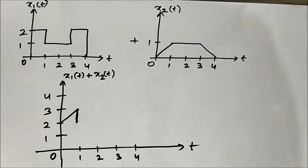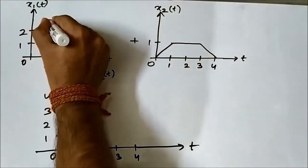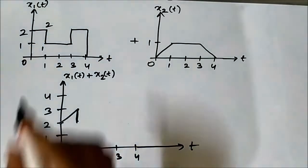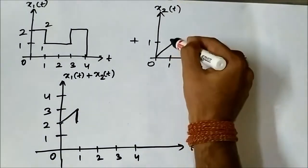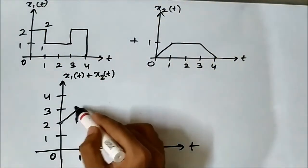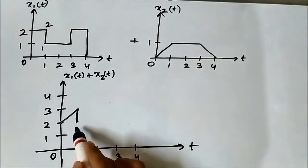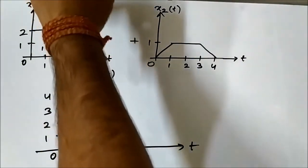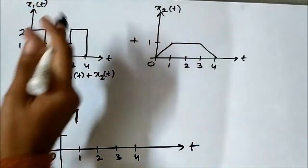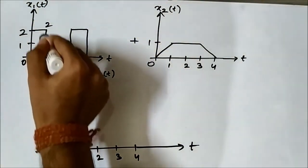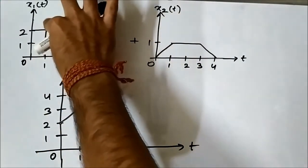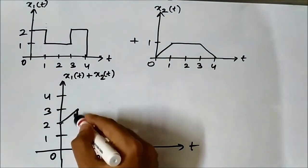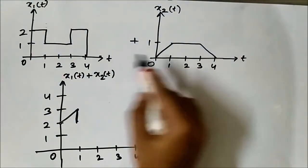To repeat: at t equals 1, x1(t) has two values — it starts at 2 then drops to 1. For x2(t) at t equals 1 there is only a single value which is 1. So for the initial value 2 of x1(t), adding 1 gives 3. For the final value 1, adding 1 gives 2. We must consider both points because there is a high-to-low transition at t equals 1.